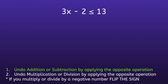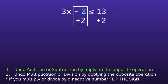The first step is to undo addition or subtraction by applying the opposite operation. So if we look at the inequality, do you see addition or subtraction? I see subtraction, and we are subtracting 2. So we want to do the opposite operation on both sides. The opposite of subtracting 2 is adding 2. If we focus on the left side, we have negative 2 plus 2, which is equal to zero, so we can cancel those out.